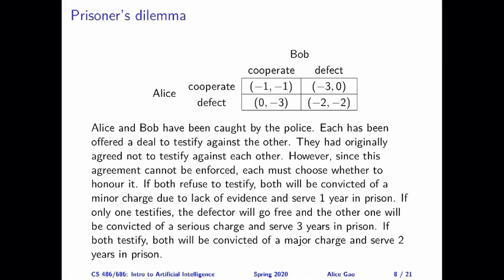The two actions are written as cooperate and defect. Cooperating means cooperating with the other prisoner, which means not testifying. And defect means testifying against the other person.